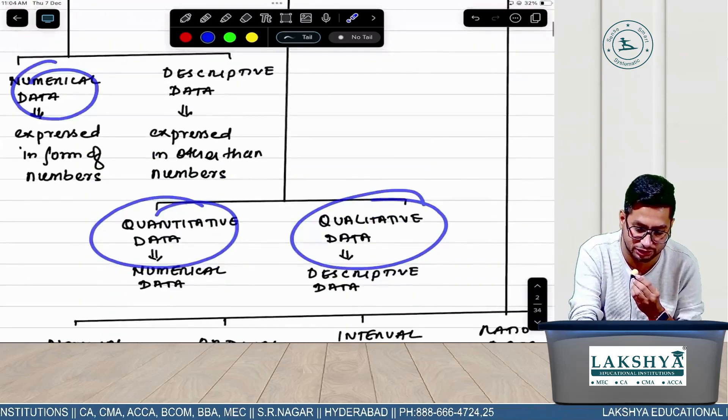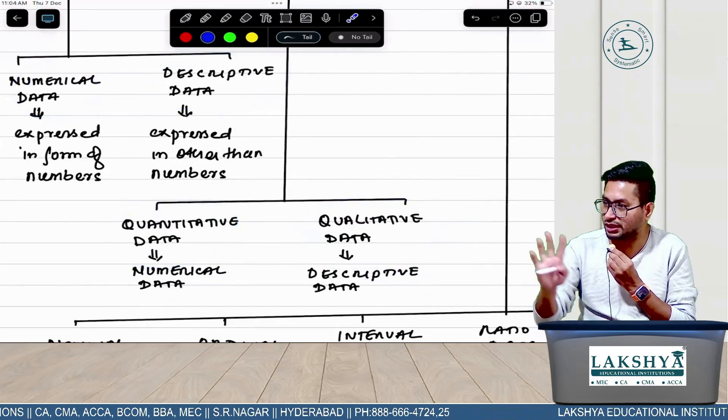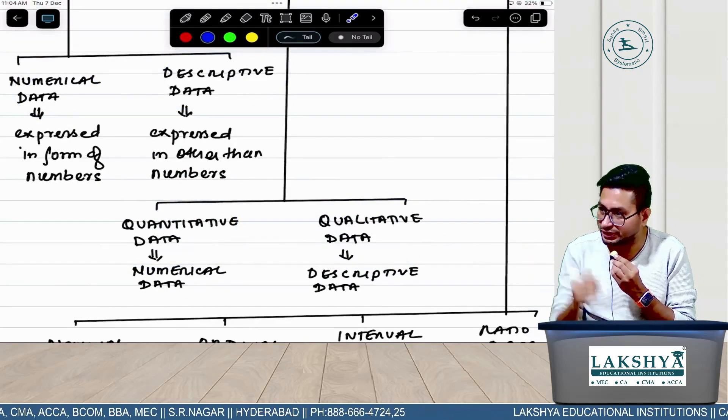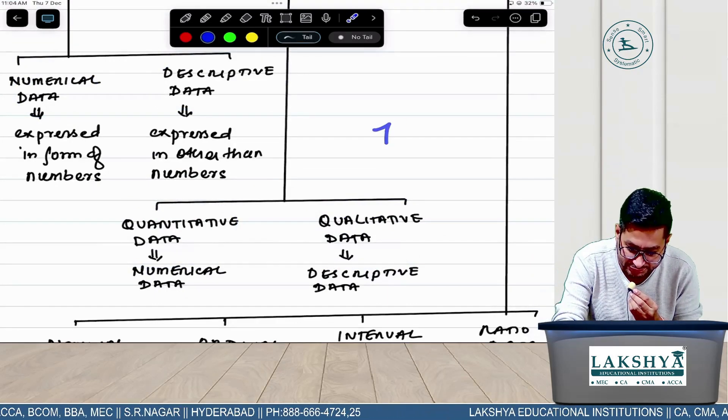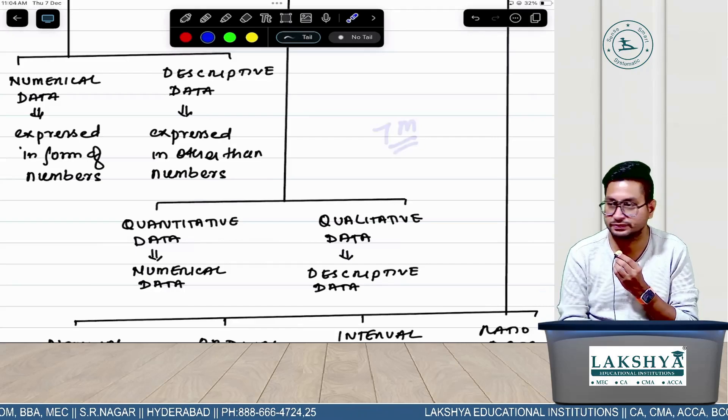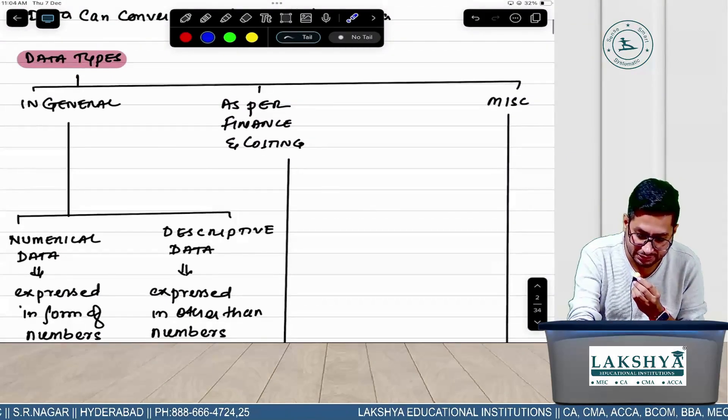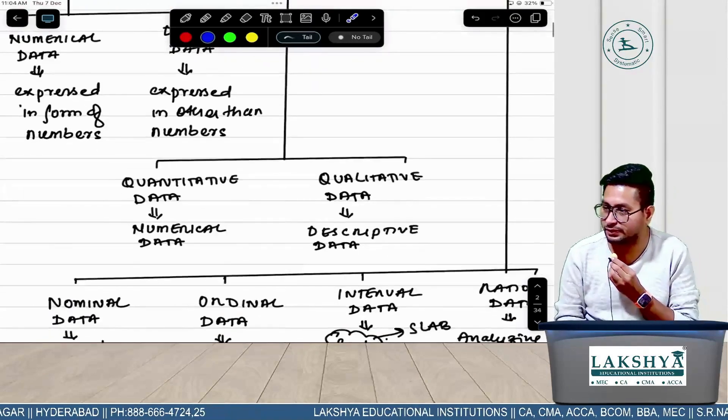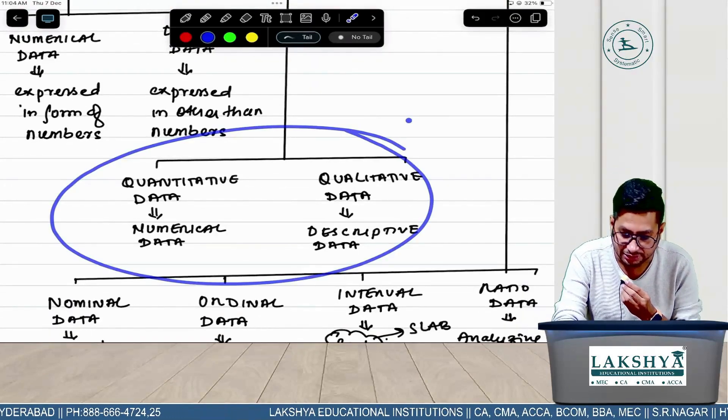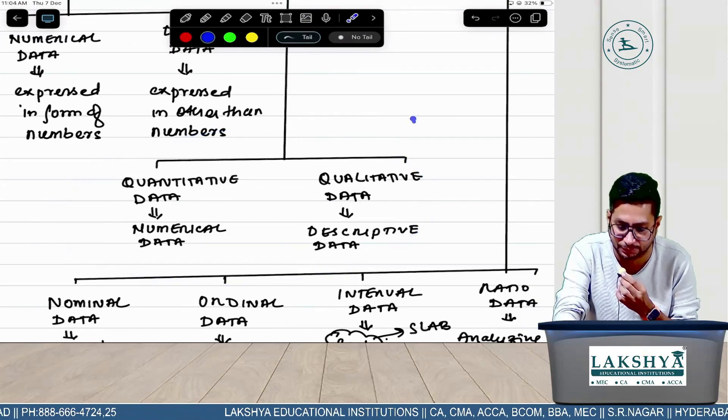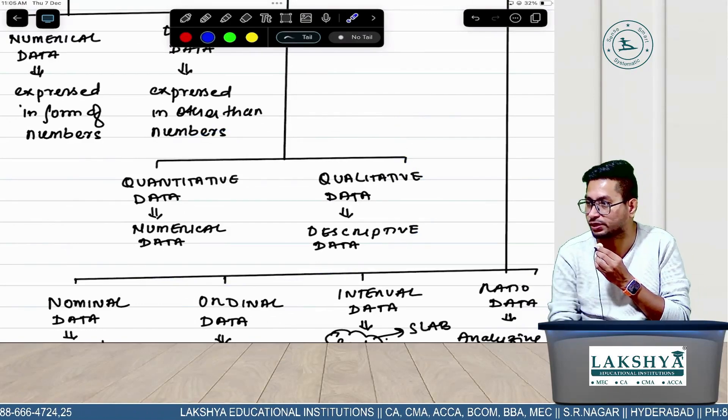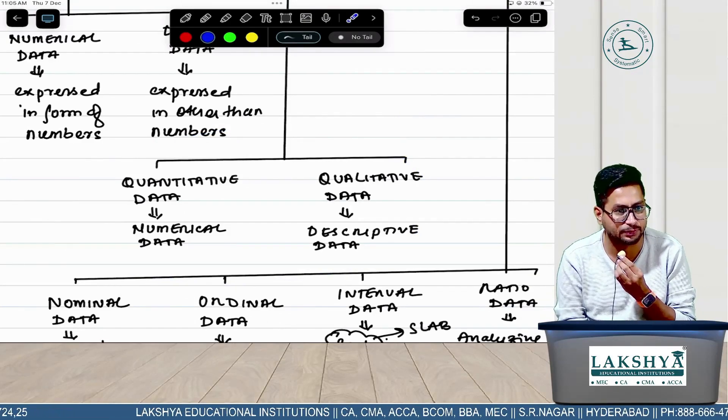In Finance and Costing it's called quantitative and qualitative, but in general the same data is called numerical and char. In four points you can complete the answer. But in the previous attempt they gave this question for seven marks.